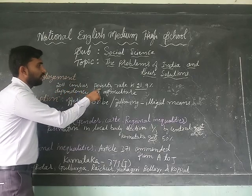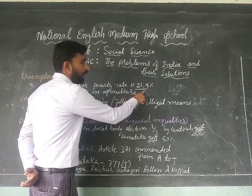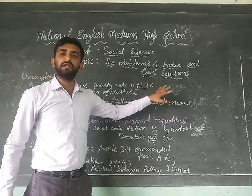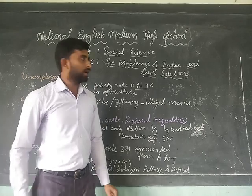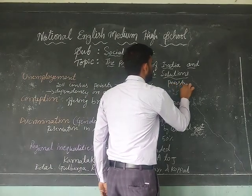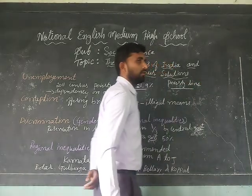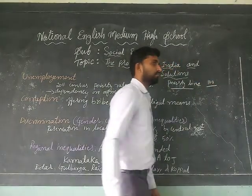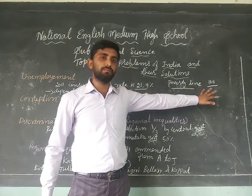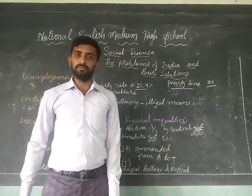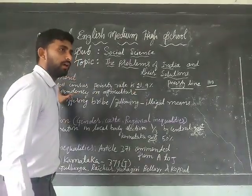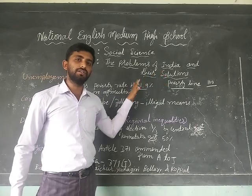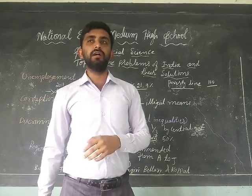The 2011 census says the poverty rate in India is 21.9%, and India is still heavily dependent on agriculture. The poverty line refers to a person who is unable to earn 100 rupees per day. This is happening because of unemployment. So the government of India has to provide employment for more people, and that is a challenging task for both the central government and state governments.